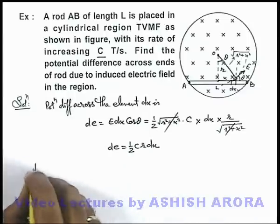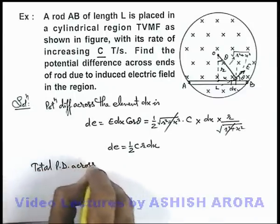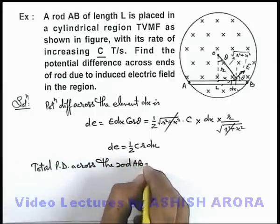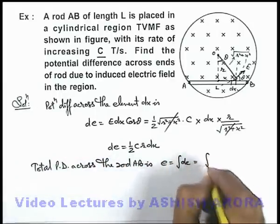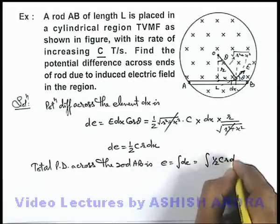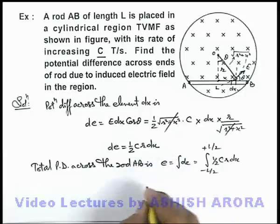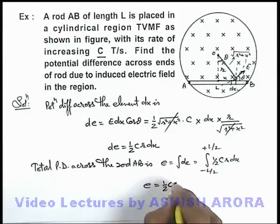So we can directly state total potential difference across the rod AB is given as integration of dE, integrated within limits from minus L by 2 to plus L by 2. The value of EMF we are getting directly is half C r L. That will be the answer to this problem.